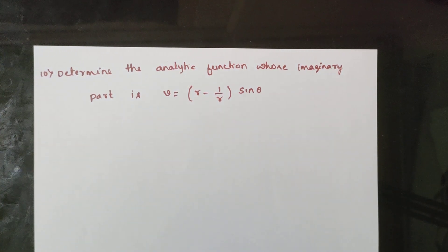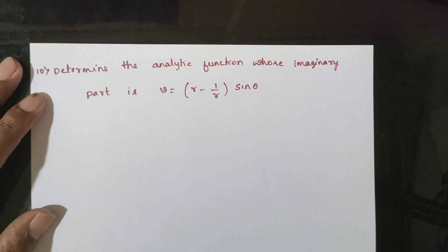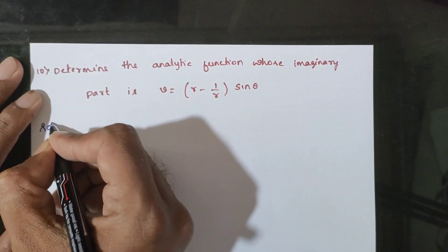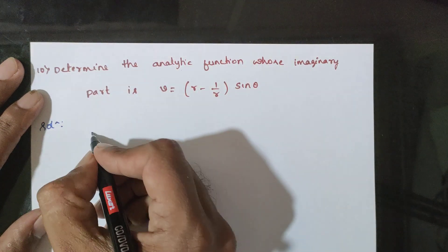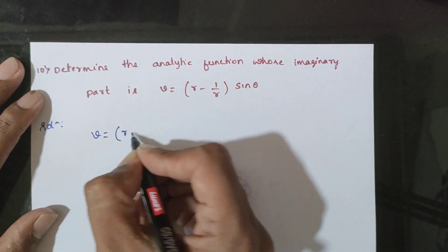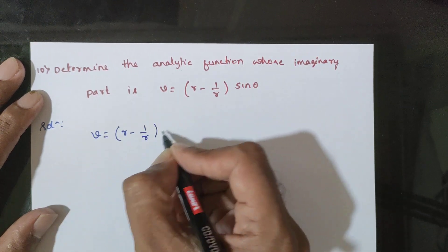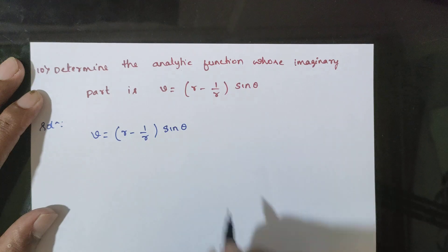The next question is to determine the analytic function whose imaginary part is v = (r - 1/r)sinθ. To find the analytic function f(z) in polar form, we start with v = (r - 1/r)sinθ.